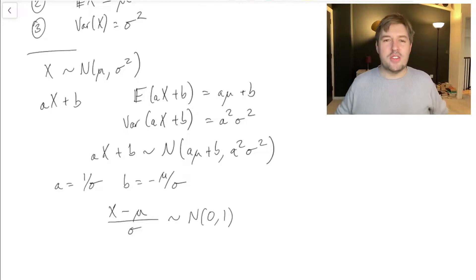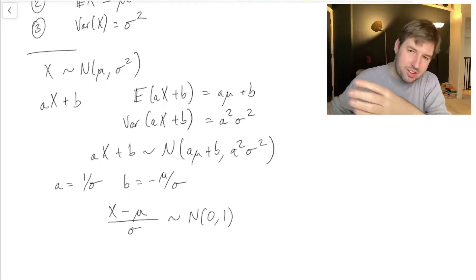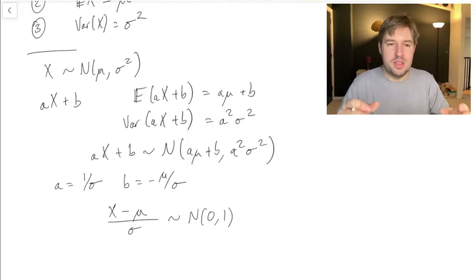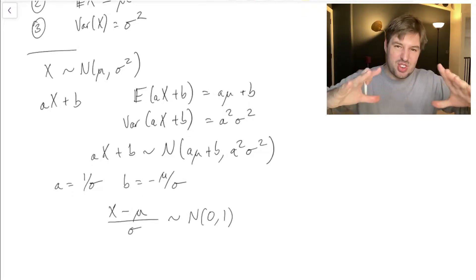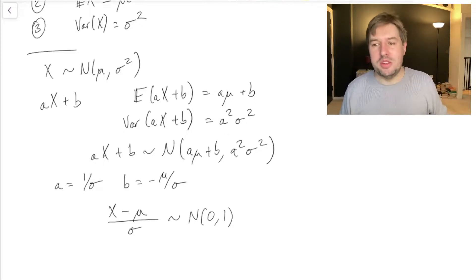So this is kind of called standardization, which is that if we have any normal distribution, we can subtract its mean to move it down to zero. We can divide through by its standard deviation to give it a constant width, and then it turns into a standard normal distribution.